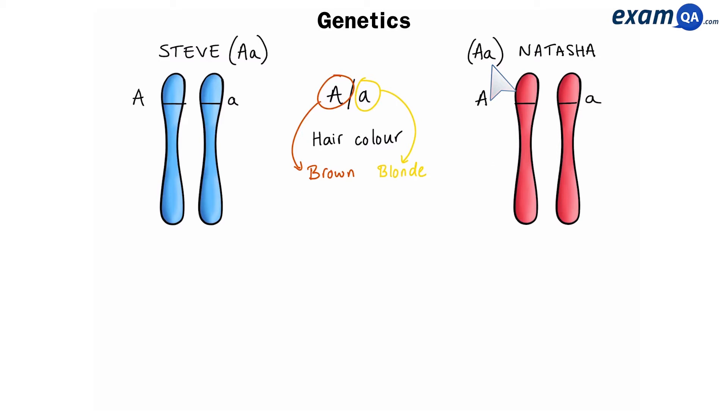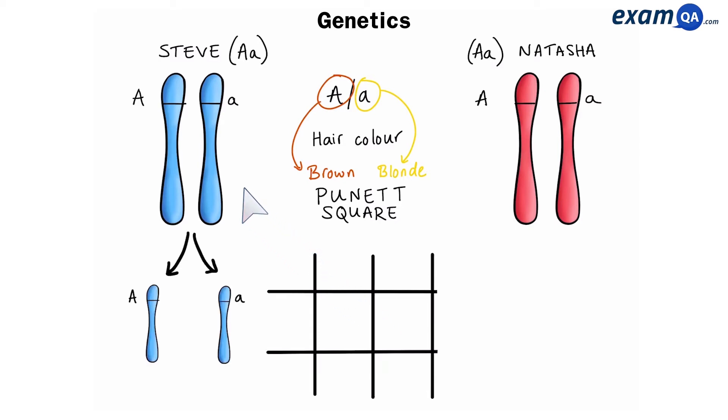Let's work out what ratio of genes their children will have. So we're going to make a Punnett square, and now we have to put the chromosomes from each parent into the square. Starting with Steve, we know that Steve can produce a chromosome with a big A and a small a. So this goes over here, and Natasha can produce a chromosome with a big A and a small a, and that goes over there.